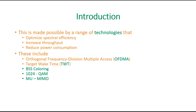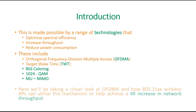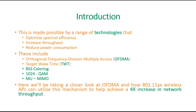The underlying technologies here are: OFDMA, that is Orthogonal Frequency Division Multiple Access; TWT, that is Target Wake Time; BSS Coloring; 1024-QAM; and MU-MIMO. In this topic we are going to discuss in detail about OFDMA and how it achieves the 4x network performance.